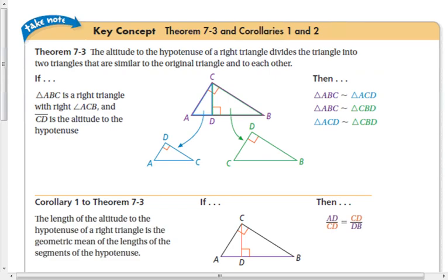Alright, we have a big page of theorems and corollaries we're going to use. In general, we call these the right triangle altitude theorems. The first thing you should know is that when you draw the altitude in a right triangle from the vertex of the two legs, you get three congruent right triangles — that's the basic theorem, Theorem 73.